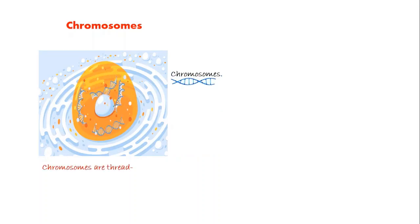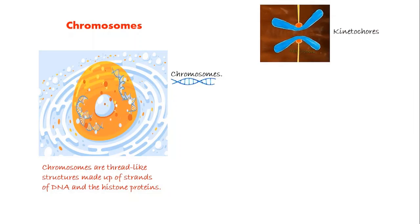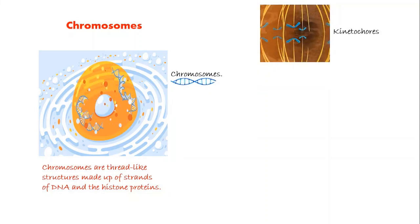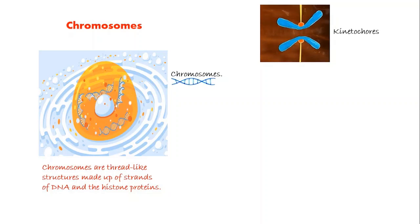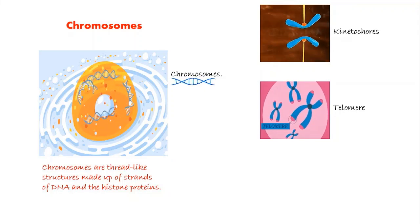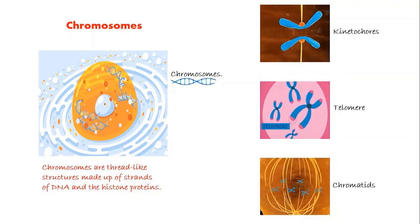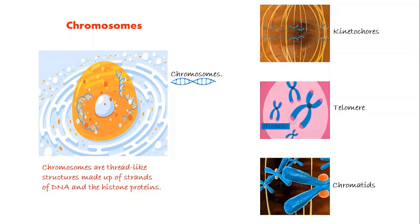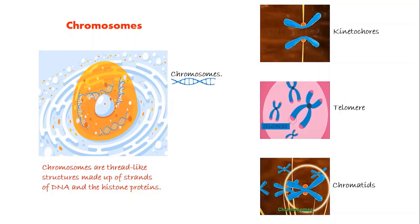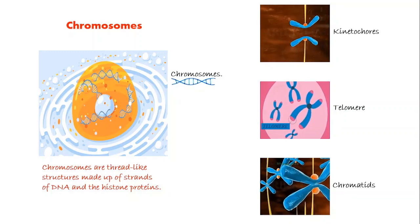The next important part of nucleus is chromosomes. Chromosomes are thread-like structures made up of strands of DNA and histone proteins. The main parts of the chromosome include kinetochore, which is a complex of proteins associated with the centromere of a chromosome during cell division, to which the microtubules of the spindle attach. Second one is telomeres, a compound structure at the end of chromosomes. Third one is chromatids, each of which consists of a P and Q arm. Each of the two thread-like strands into which a chromosome divides longitudinally during cell division. Each contains a double helix of DNA.